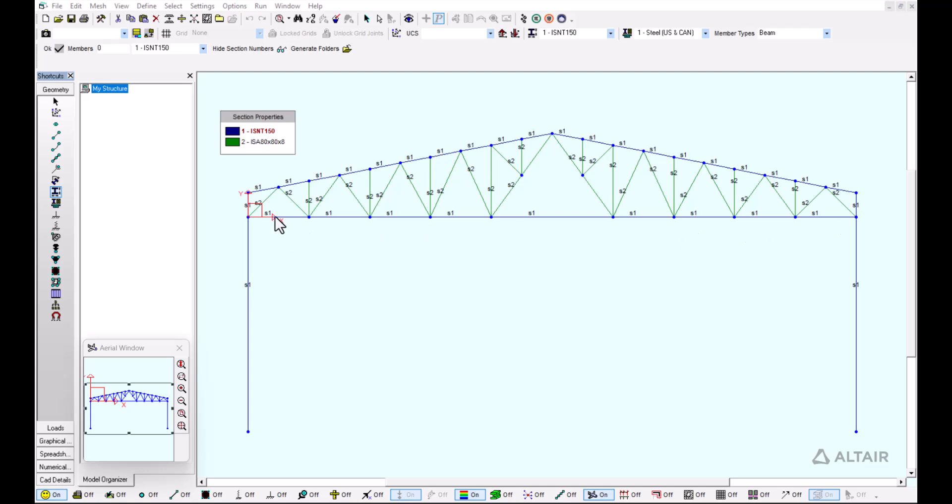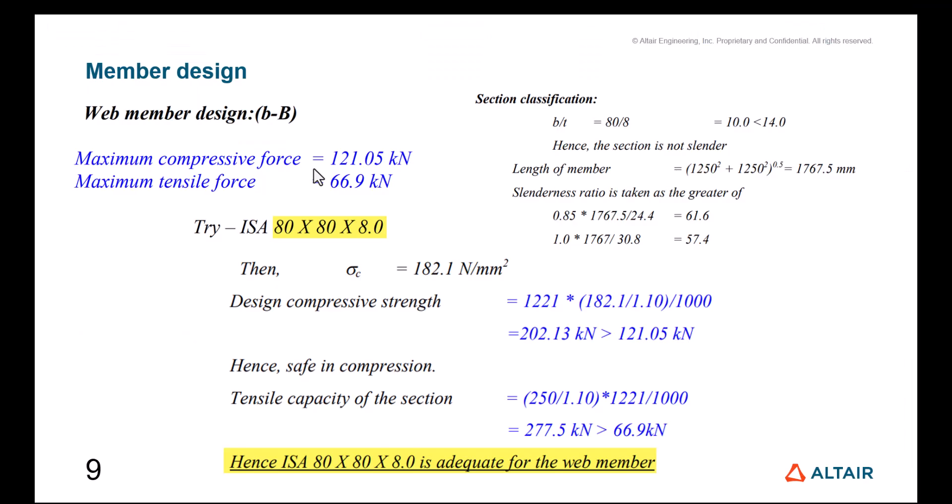When it comes to the web member design, we're going to take the B member. We have from the analysis a maximum compressive force of 121.05 kilonewtons and a maximum tensile force of 66.9 kilonewtons. We're going to try an ISA 80 x 80 x 8.0 and check the member. First, we have the section classification, and the section is not slender.